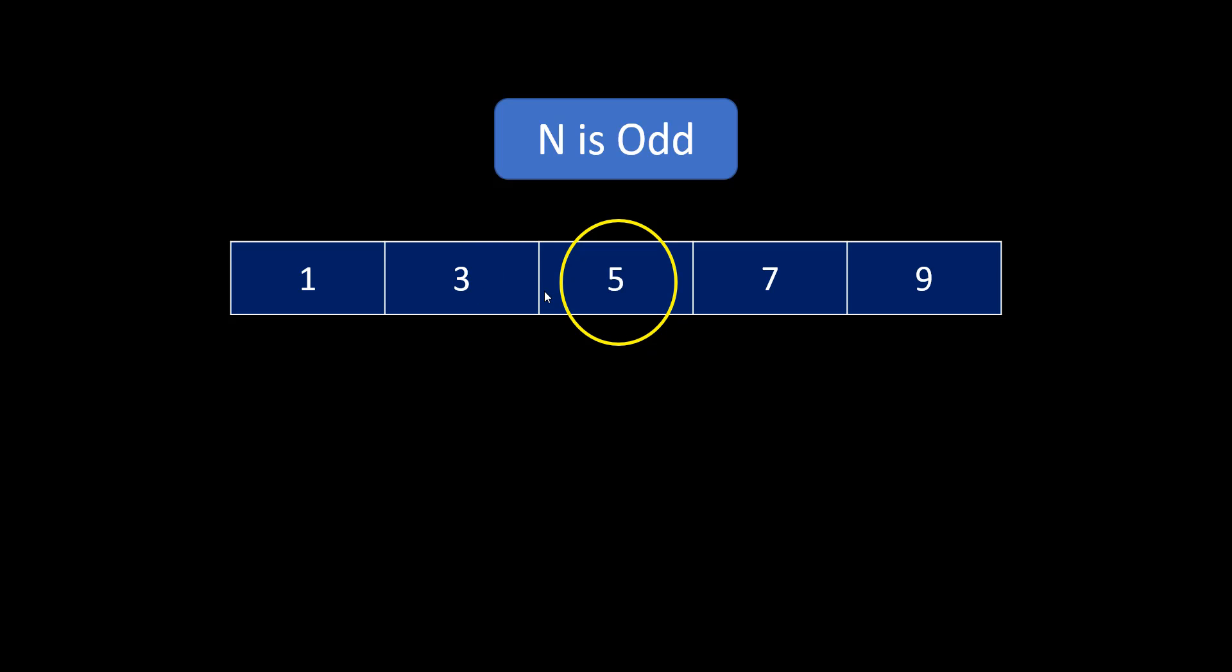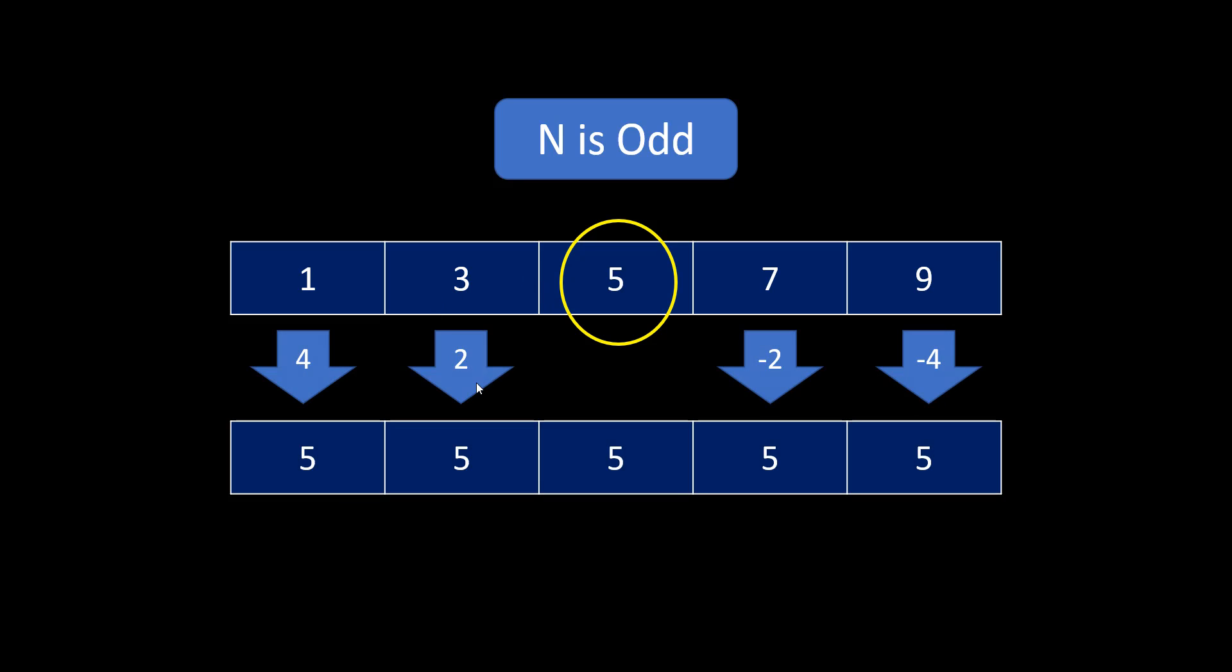So, over here, I need to change everything into 5. So, what I am going to do is I need to add 4, add 2, subtract 2 and subtract 4.